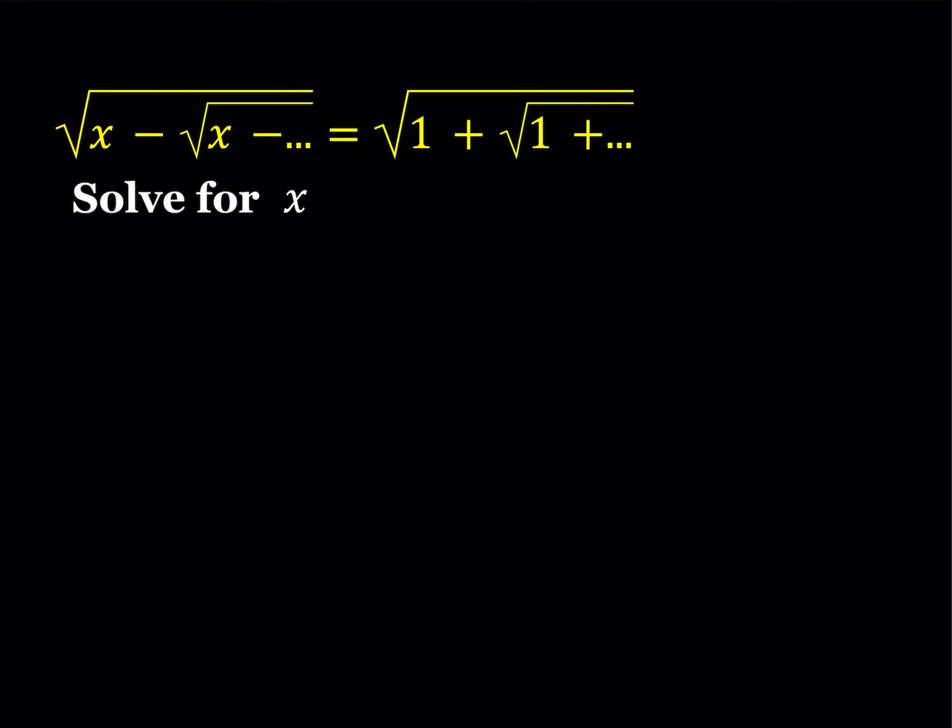We have the square root of x minus the square root of x minus the square root of x, so on and so forth, equals the square root of 1 plus the square root of 1 plus the square root of 1, and so on. It goes on forever, and we're going to be solving for x. We have two infinite radicals on both sides.